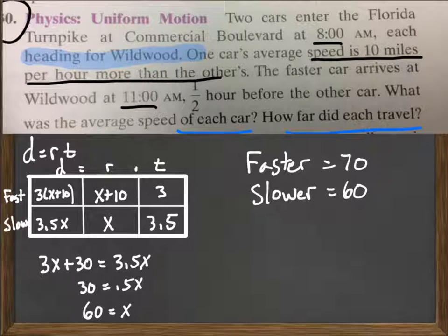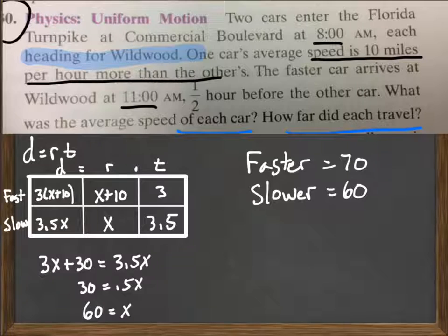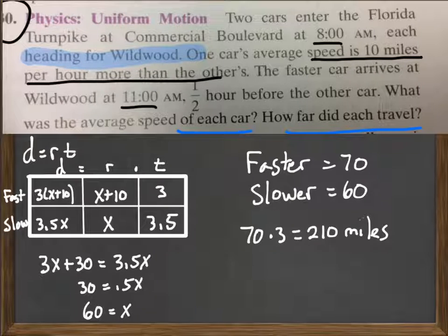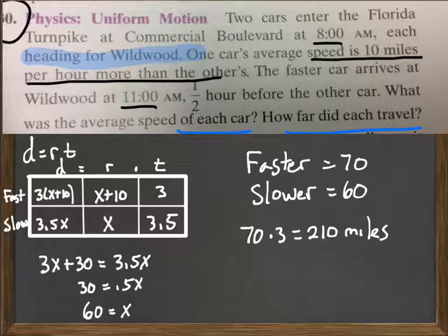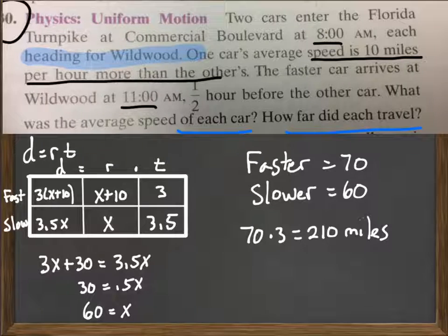Well, they both traveled the same distance. That was our underlying assumption. So we could take the speed of either car, multiply it times the time to get the distance. So whether we do 70 times 3 or 60 times 3.5, we will get that they traveled 210 miles on this trip with an average speed for the faster car of 70 miles per hour and an average speed for the slower car of 60 miles per hour.